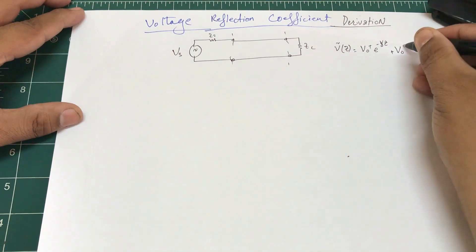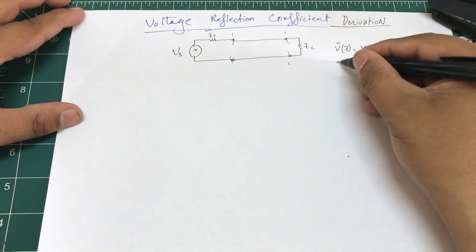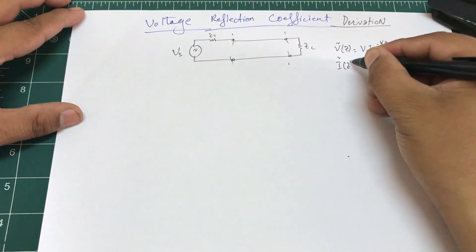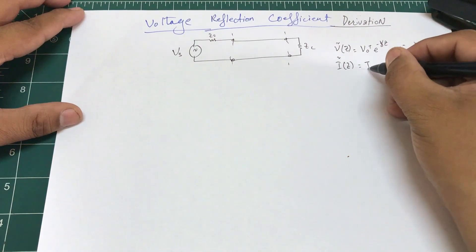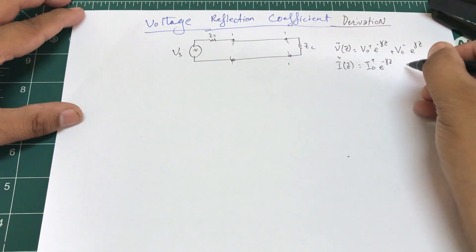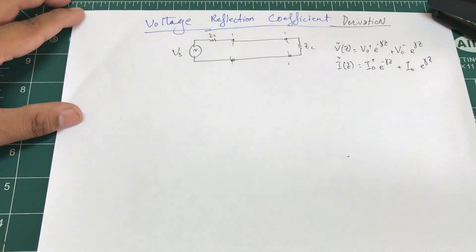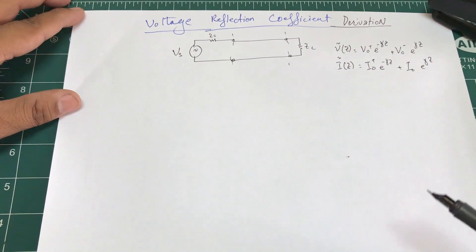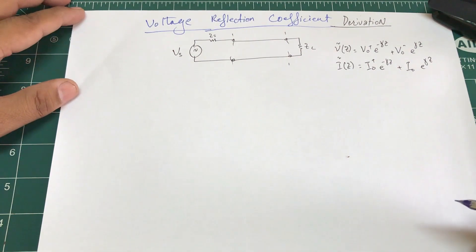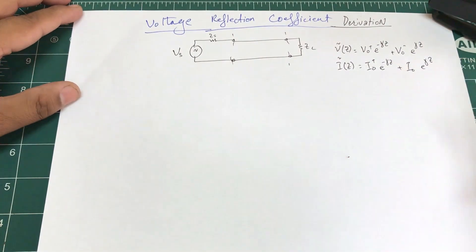plus V0- * e^(γz). And i(z) = I0+ * e^(-γz) + I0- * e^(γz). We started with these two equations in our last video, and now we're going to use them to derive the voltage reflection coefficient.